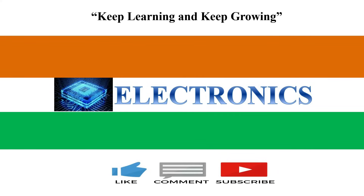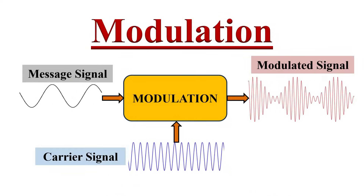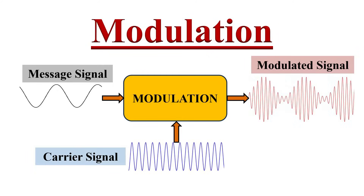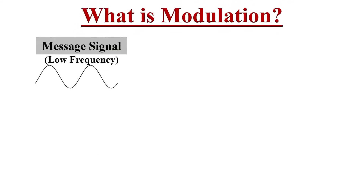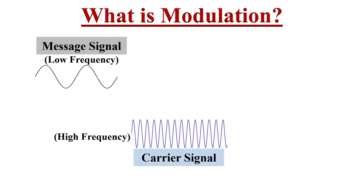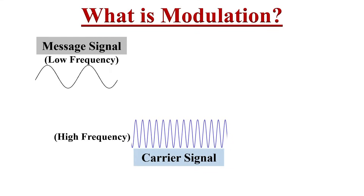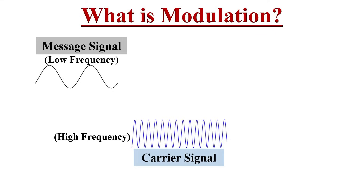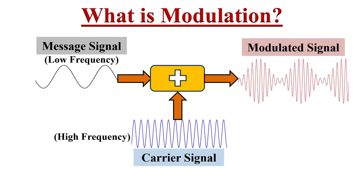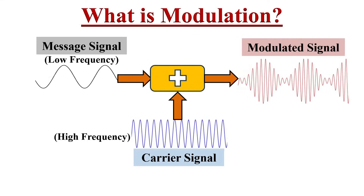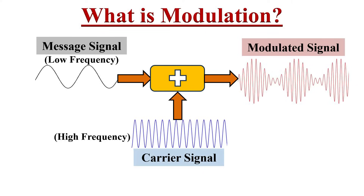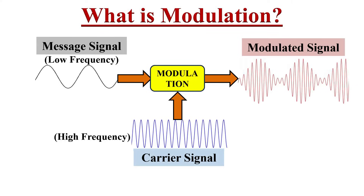Hello friends, welcome to the YouTube channel Electronics. In this video we'll learn what is modulation, where it is used, and different types of modulation techniques. In telecommunication, to transmit a low frequency message signal to far distances is a challenging task, so we involve another high frequency signal called the carrier signal. We superimpose both signals on one another to generate a new signal — this process is called modulation.